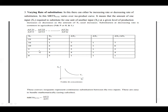In the decreasing rate example, quantities of x1 and x2 are given. The change in x2 goes on decreasing — 7, 6, 5, 4, 1 — while the change in x1 remains constant. Using the formula MRS = Δx2/Δx1, the MRS also goes on decreasing: 7, 6, 5, 4, 1. This is called the decreasing rate of substitution, and the shape of the isoquant in this case is convex to the origin.